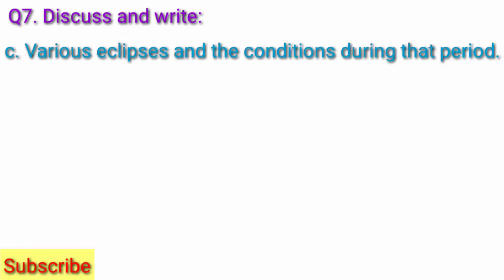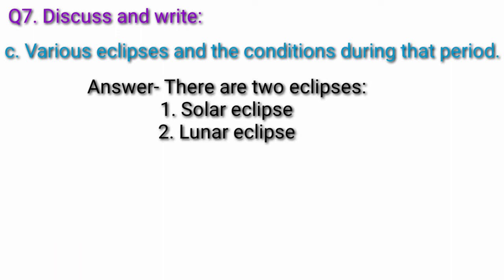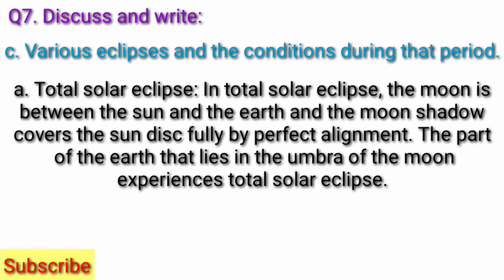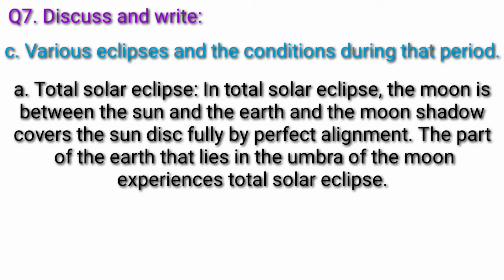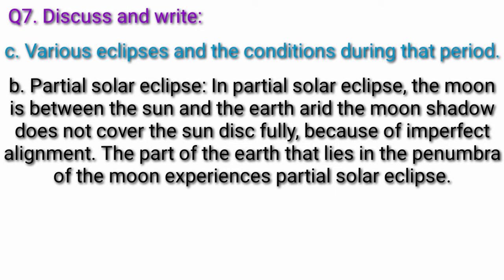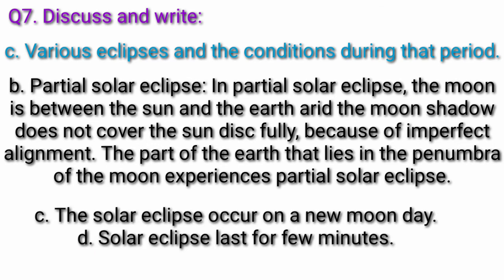Question C: Various eclipses and the conditions during that period. Answer: There are two eclipses. A. Solar eclipse — there are two types: total solar eclipse and partial solar eclipse. In a total solar eclipse, the moon is between the sun and the earth, and the moon's shadow covers the sun disk fully by perfect alignment. The part of the earth that lies in the umbra of the moon experiences total solar eclipse. In a partial solar eclipse, the moon is between the sun and the earth, but the moon's shadow does not cover the sun disk fully because of imperfect alignment. The part of the earth that lies in the penumbra of the moon experiences partial solar eclipse. The solar eclipse occurs on a new moon day and lasts for a few minutes.